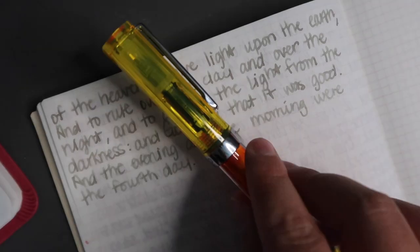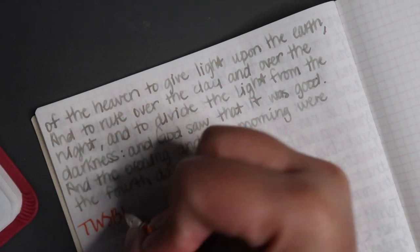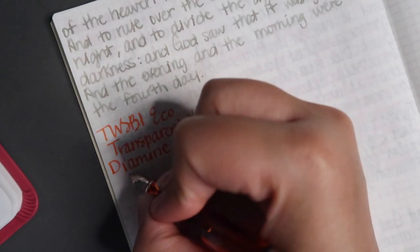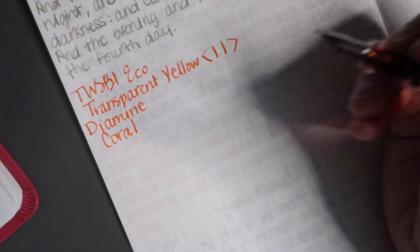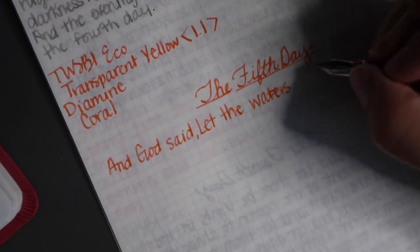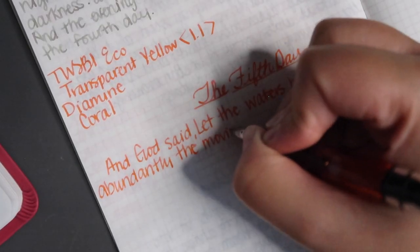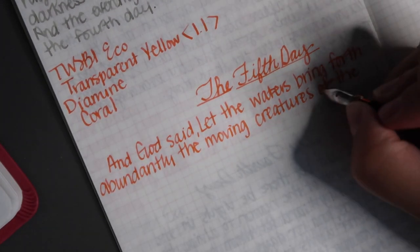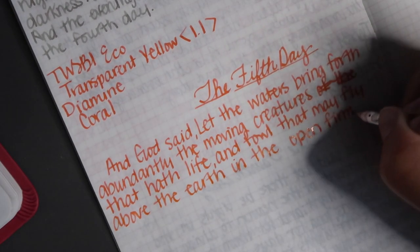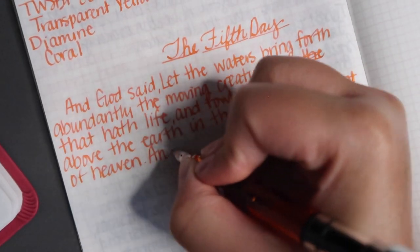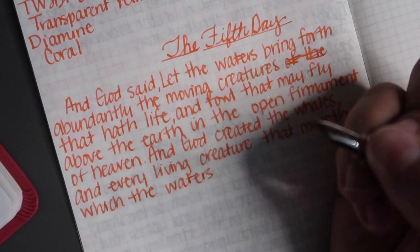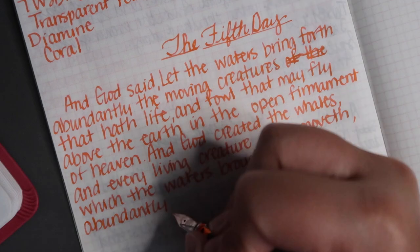I am finally to my TWSBI Eco in transparent yellow. This is in a 1.1 millimeter stub. The ink I'm using is Diamine. The fifth day. And God said, Let the waters bring forth abundantly the moving creatures that hath life, and fowl that may fly above the earth in the open firmament of heaven. And God created the whales and every living creature that moveth, which the waters brought forth abundantly after their kind, and the winged fowl after his kind. And God saw that it was good, and God blessed them, saying, Be fruitful and multiply, and fill the waters in the seas, and let fowl multiply in the earth. And the evening and the morning were the fifth day.